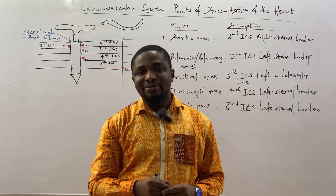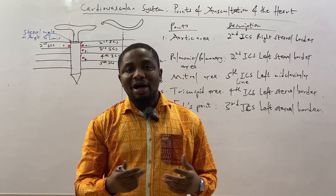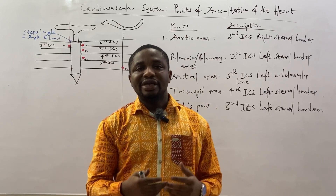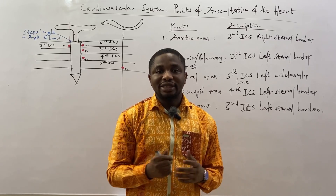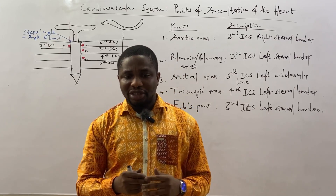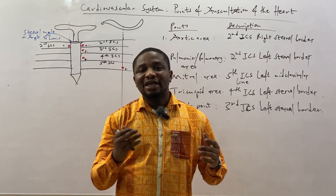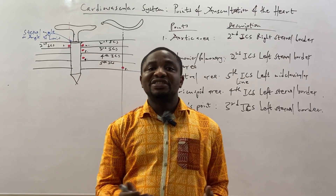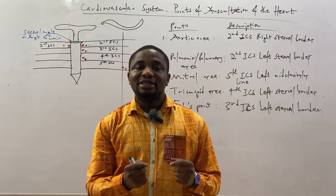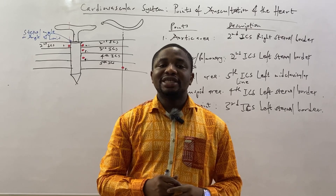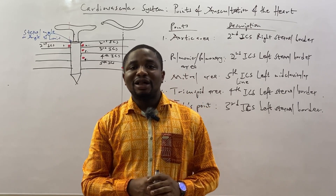The mitral area is also known as the cardiac apex, because that is where the apex beat is felt or palpated in a normal human being — in the fifth intercostal space, left mid-clavicular line. The fourth, the tricuspid area, can be auscultated in the fourth intercostal space, left sternal border or left sternal edge. And the additional fifth point, Erb's point, is auscultated in the third intercostal space, left sternal border.